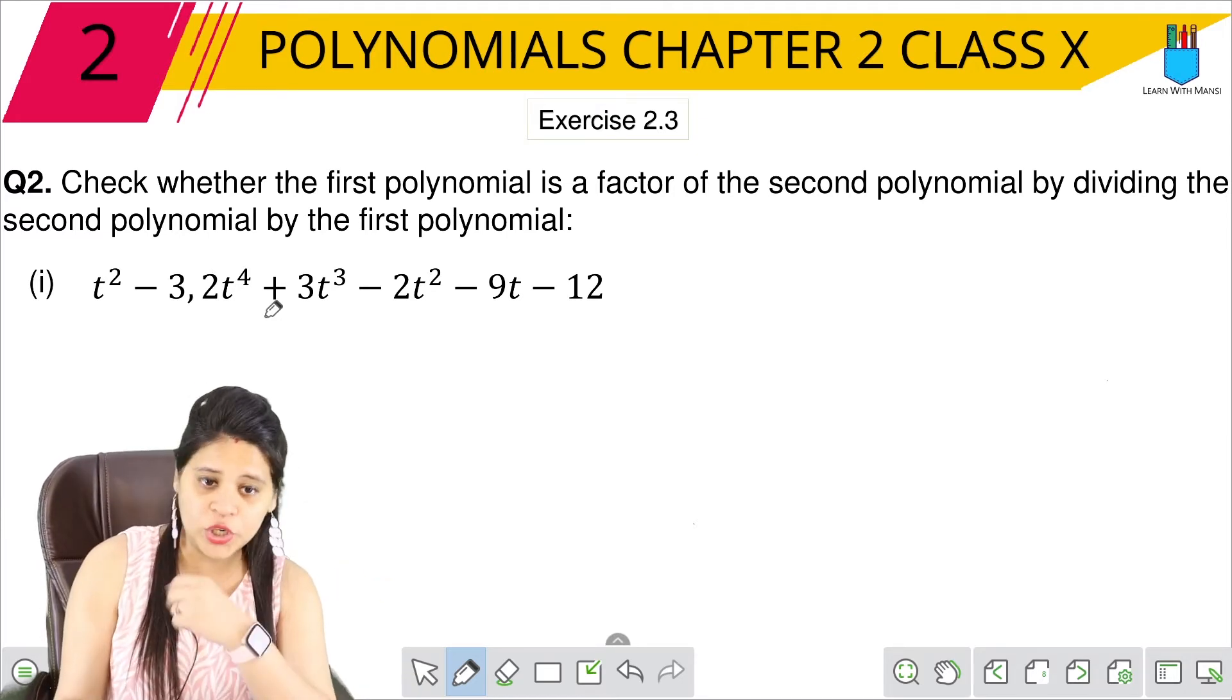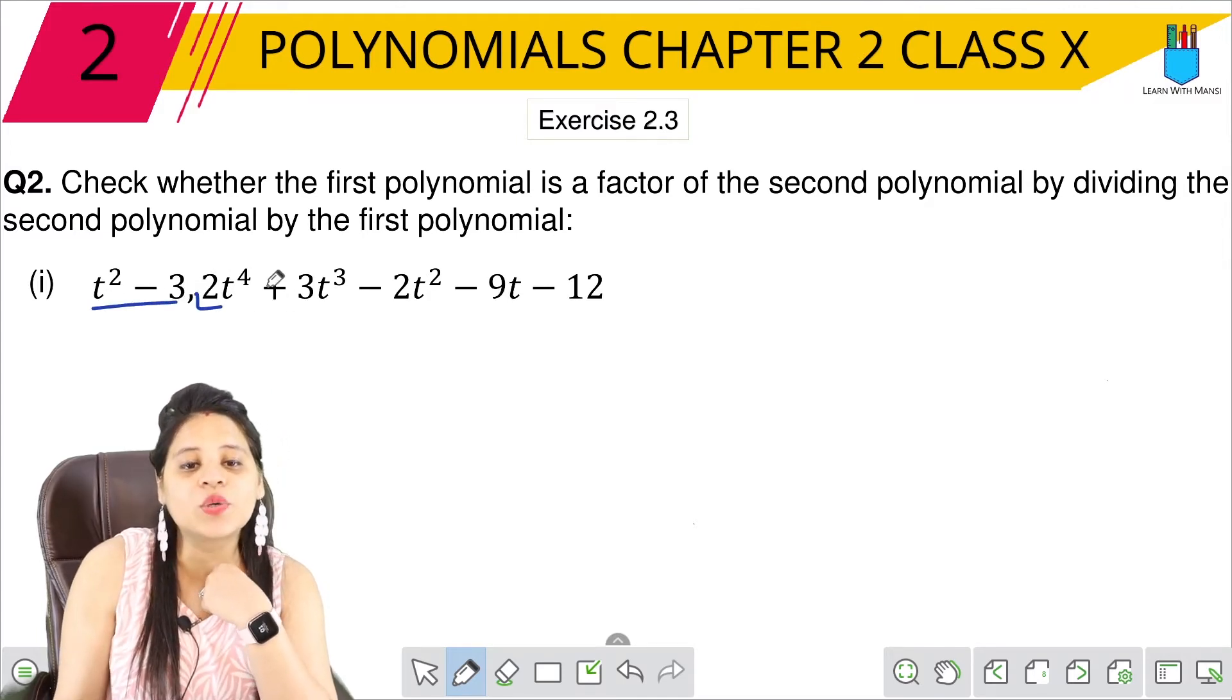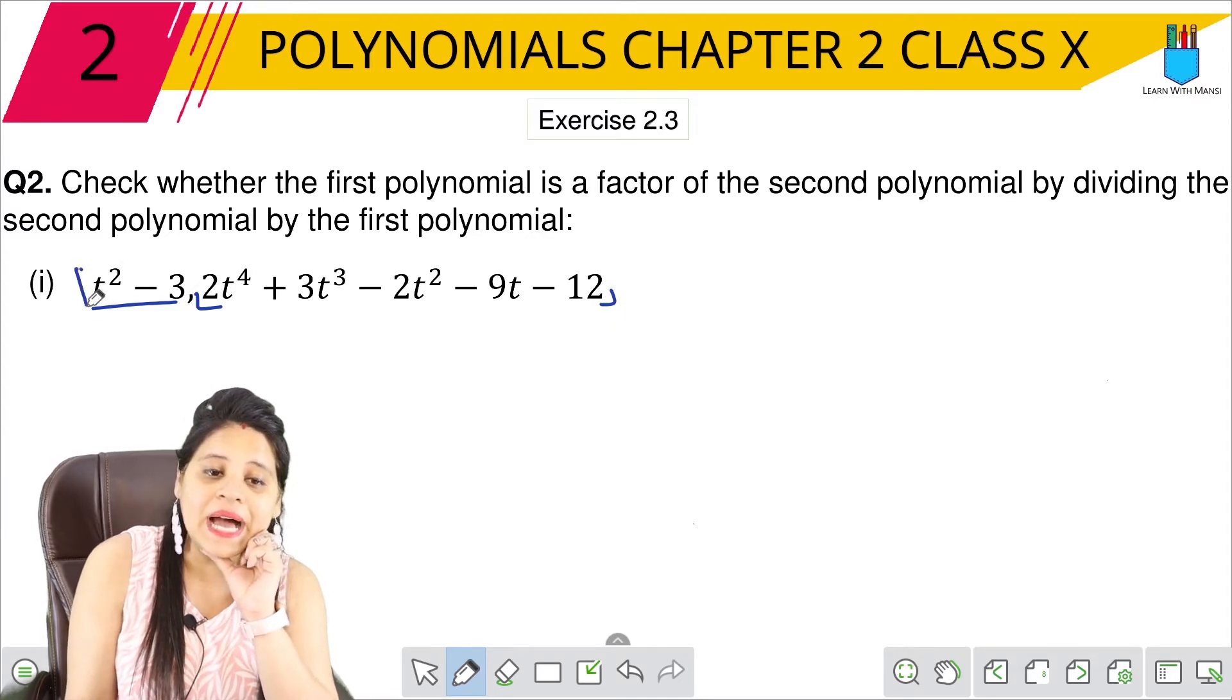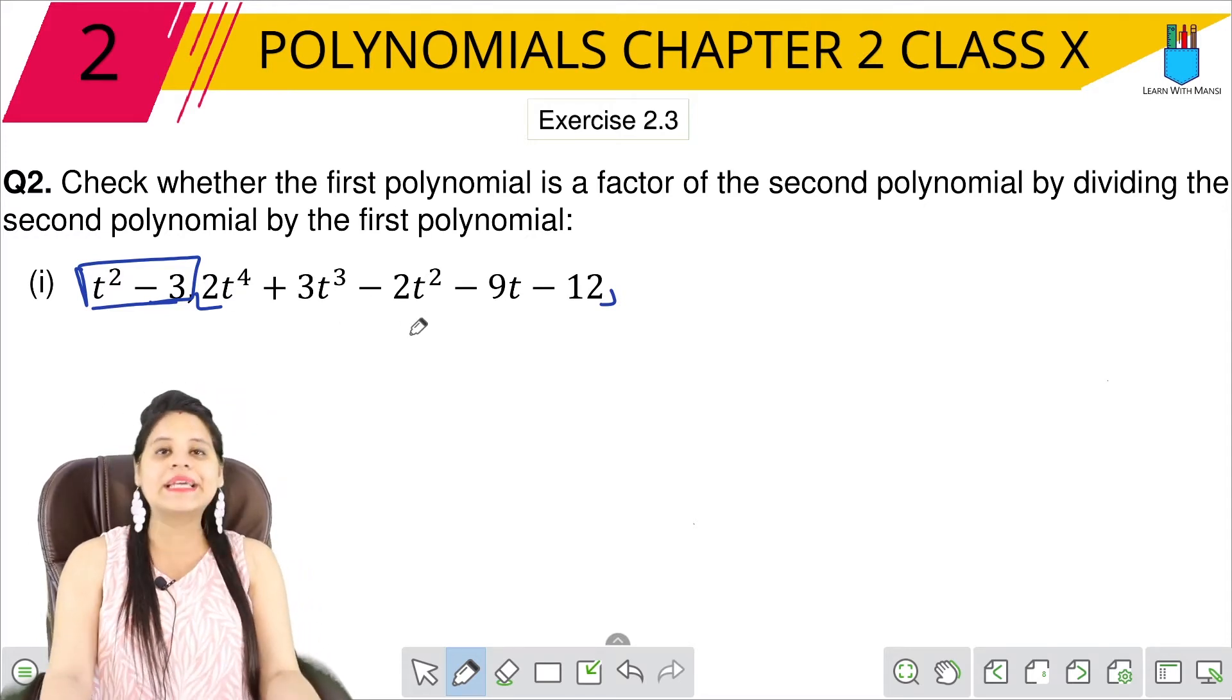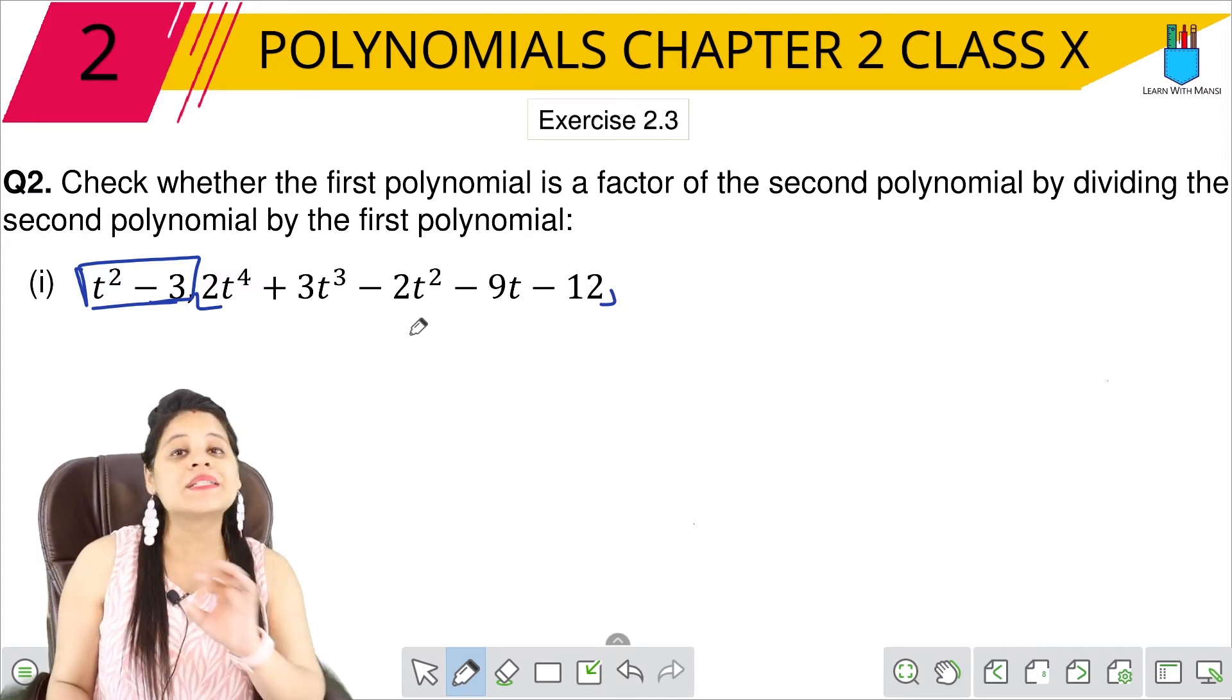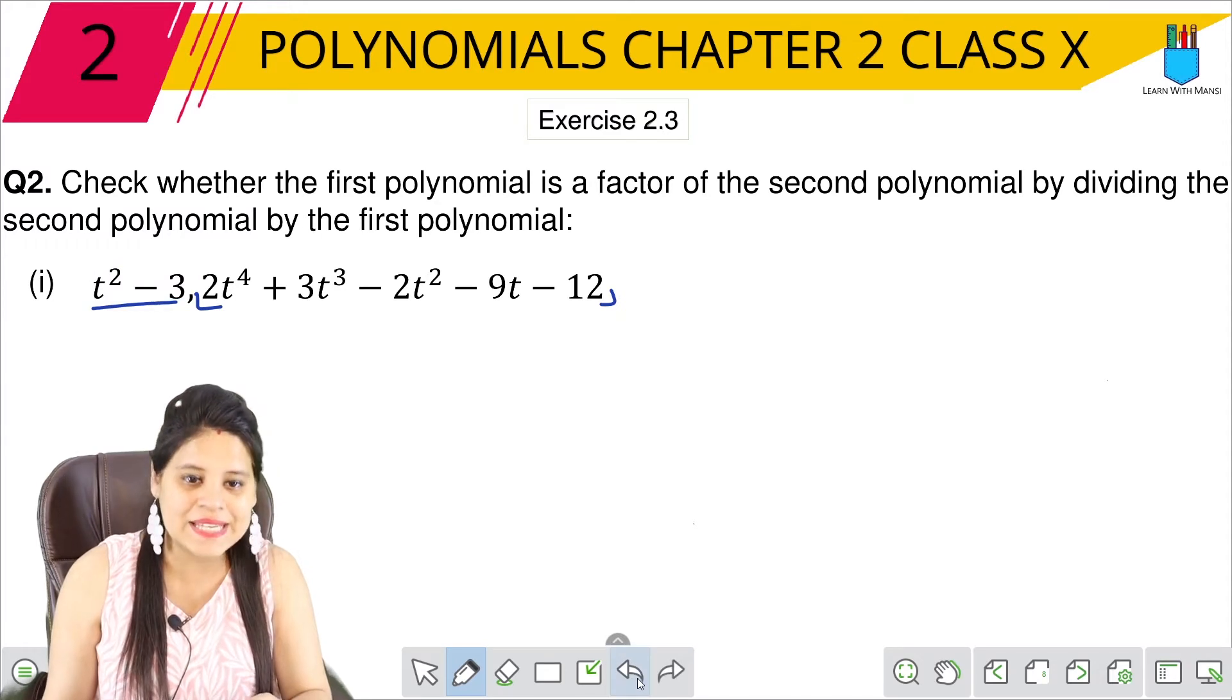So here we have two polynomials. One is t² - 3 and one is 2t⁴ and this is so big. Let's tell if t² - 3 is a factor or not. So how do we know? We will divide it. If the remainder is 0, then it will be the factor. If the remainder is not 0, then it will not be the factor.